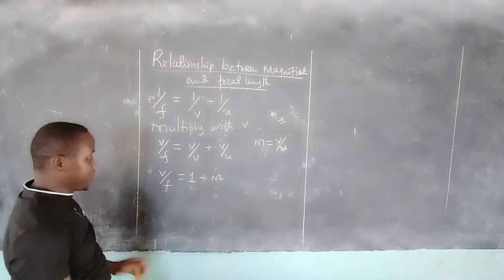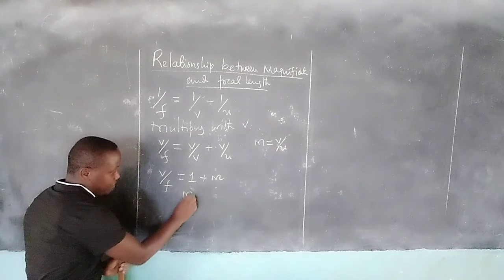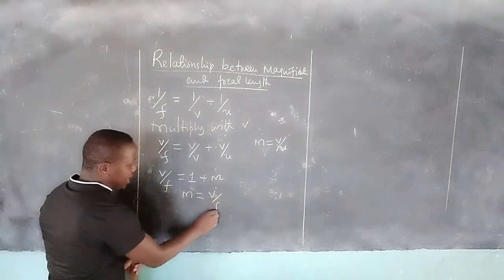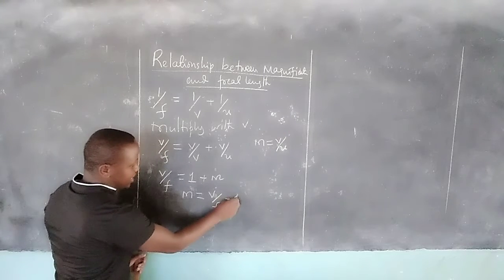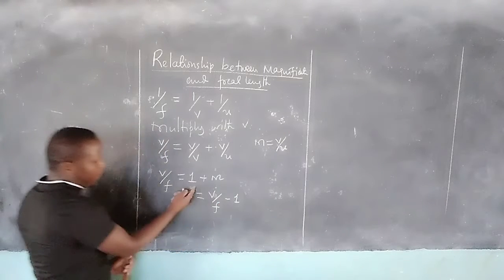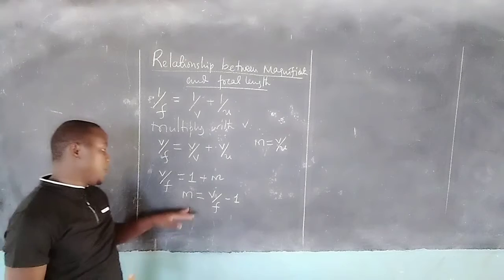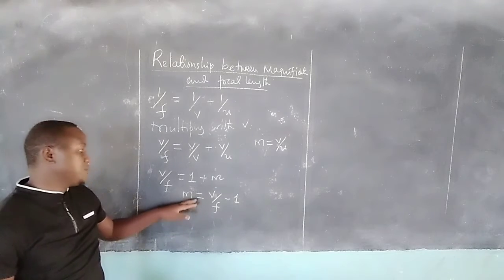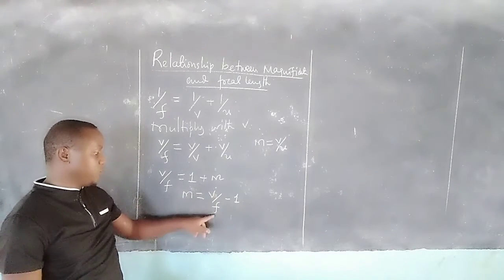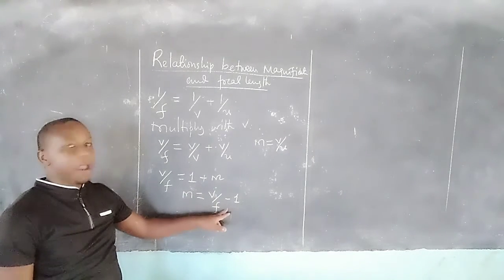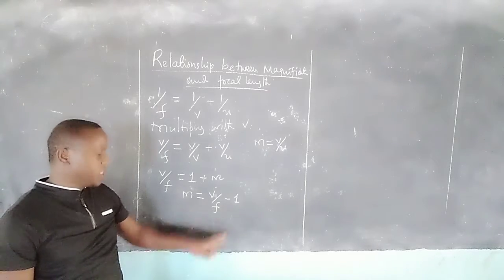Rearranging this equation so that we start with magnification, we bring negative 1 to the side where V/F is. We can now see that magnification is given by M = V/F - 1.